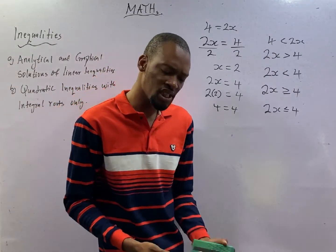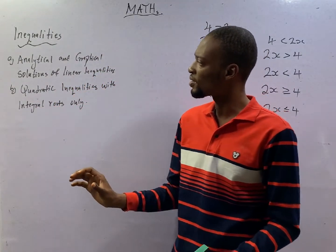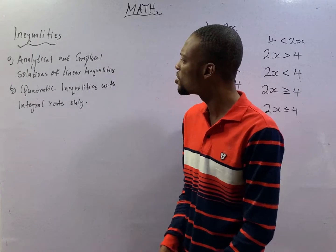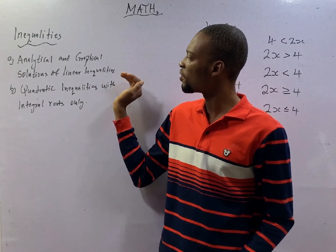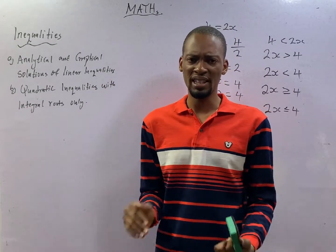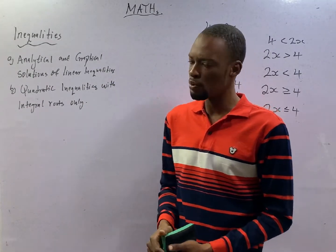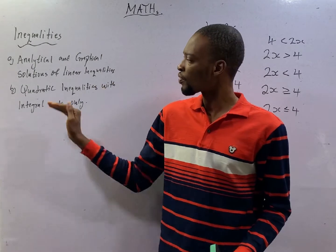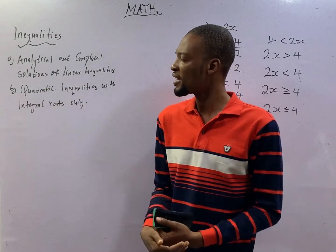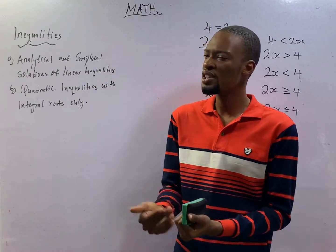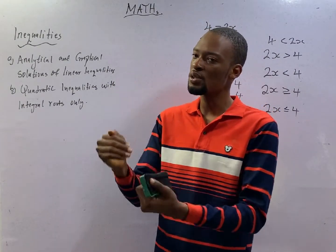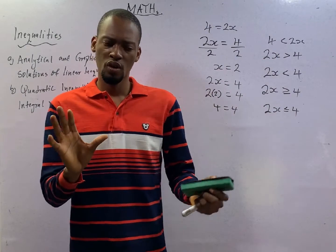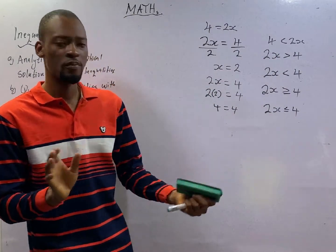Let us begin looking at JAMB past and likely questions under inequalities — the more we solve, the more we understand. JAMB expects you to know analytic and graphical solutions of linear inequalities, where the highest power of the variable is 1. JAMB also expects you to know quadratic inequalities with integral roots only — that is, inequalities where the highest power of the variable is 2. Integral roots means only real roots: whole numbers, positive numbers, integers.